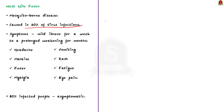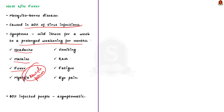West Nile Fever is characterized by sudden onset of symptoms like headache, malaise, fever, muscle pain (myalgia), vomiting, rash, fatigue, and eye pain. Severity ranges from a mild illness for a week to a prolonged weakening for months. Notably, 80% of people infected with the West Nile Virus will not show any symptoms, which means the disease may go unnoticed and can lead to sudden outbreaks.